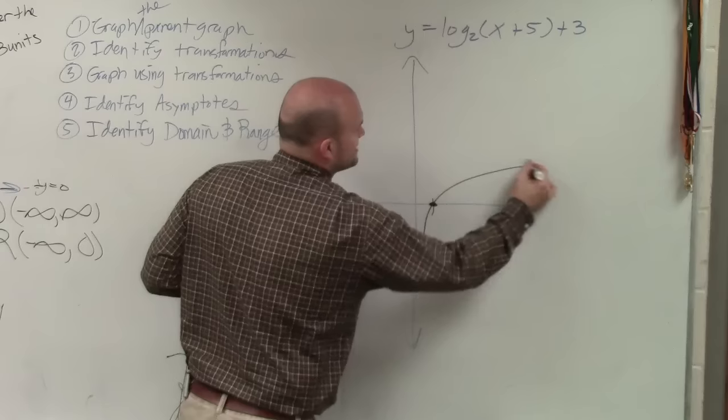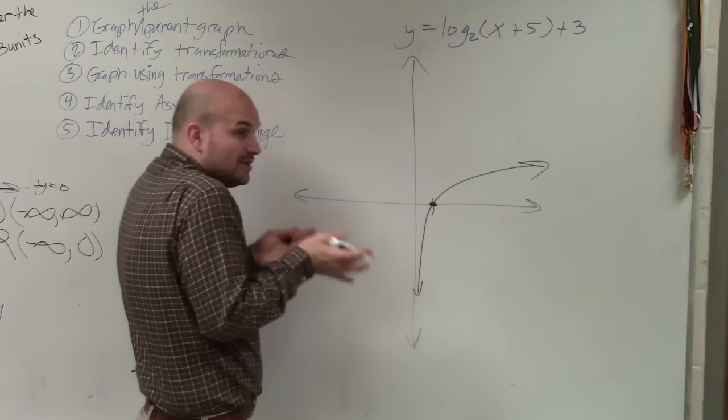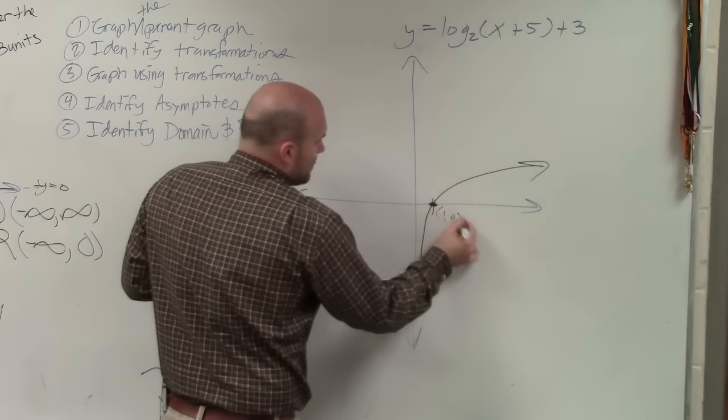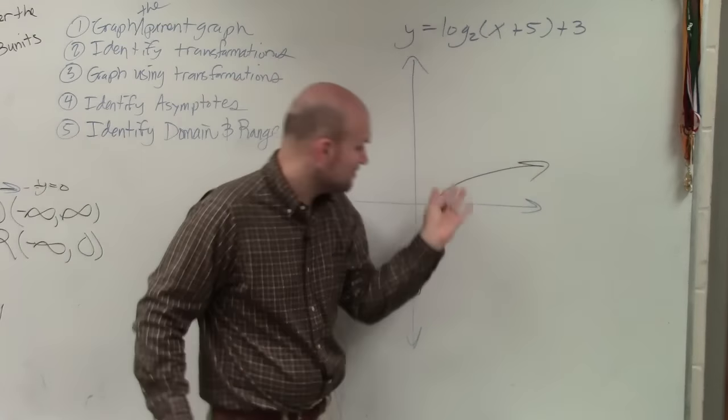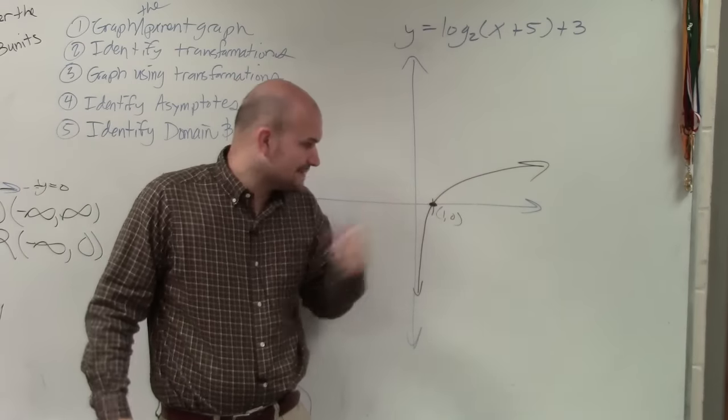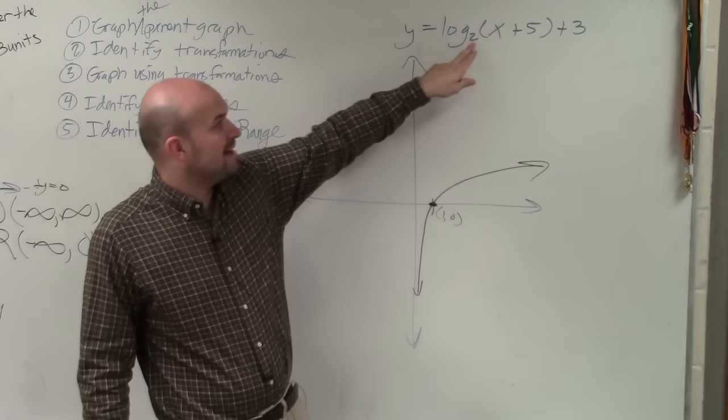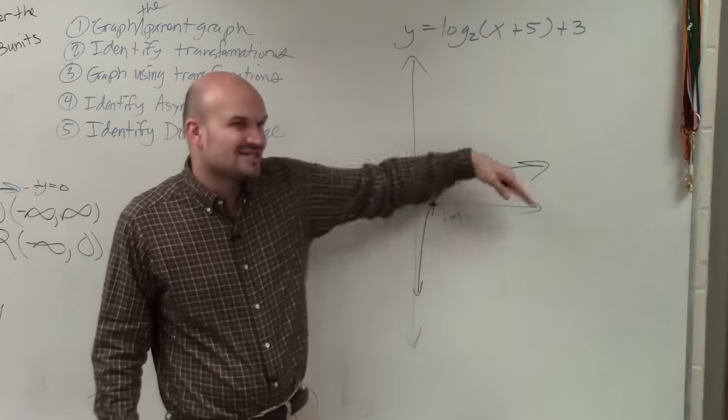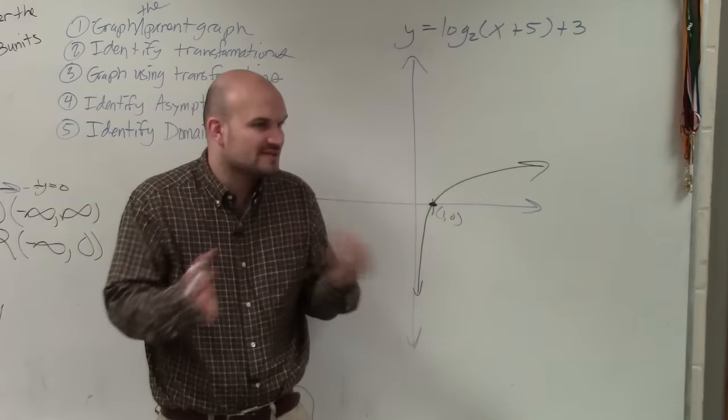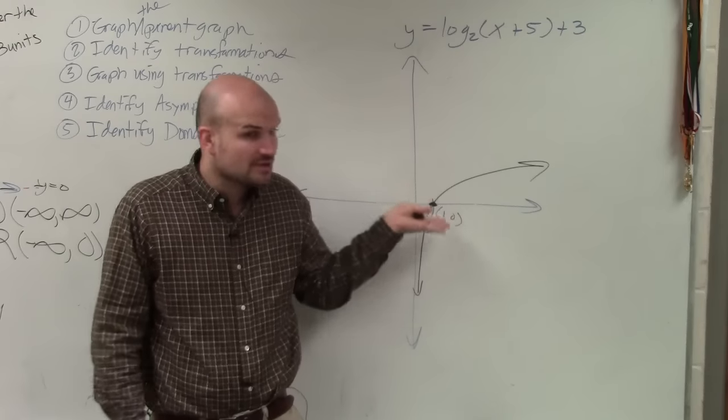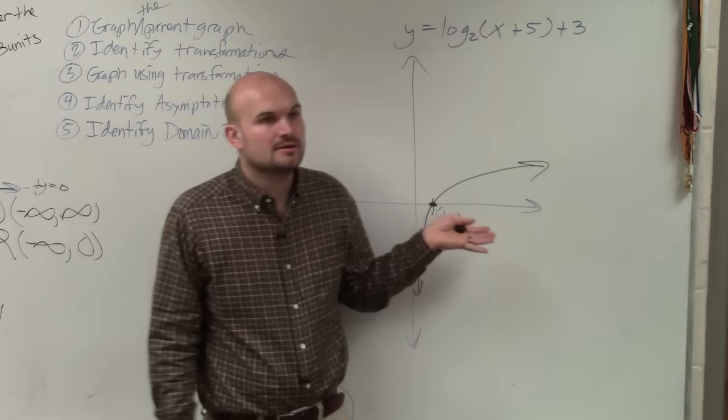So the graph is going to look something like this. And all I really wanted you guys to know was that in its parent graph form, you have an x-intercept at (1,0). And really, depending on what the base was, that just kind of tells you how sharp the curve is going to be. But the parent graph should look like this, roughly. It's a sketch, really. Wait, always?